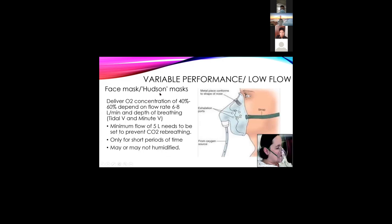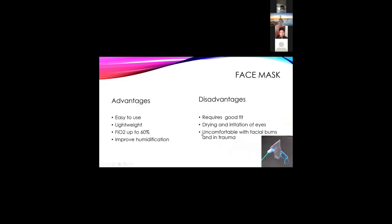The second variable performance device is the face mask, or Hudson mask. This delivers oxygen concentration of about 40 to 60%, depending on the flow rate of 6 to 8 liters per minute, and depth of breathing — tidal volume and minute volume. At least 5 liters per minute must be given; otherwise there will be carbon dioxide re-breathing. It is only for short periods. Disadvantages include requiring a good seal, dryness and irritation of the eyes, and discomfort for patients with facial trauma or burns.